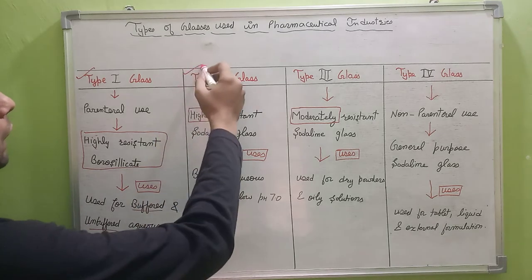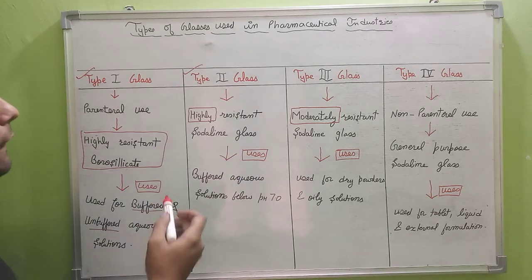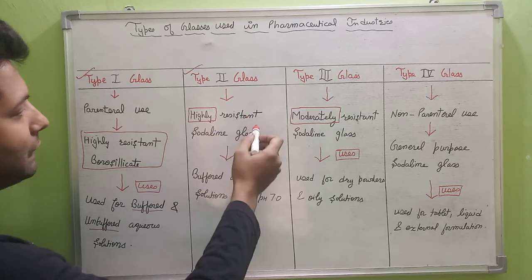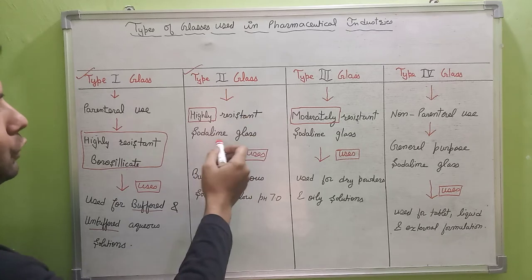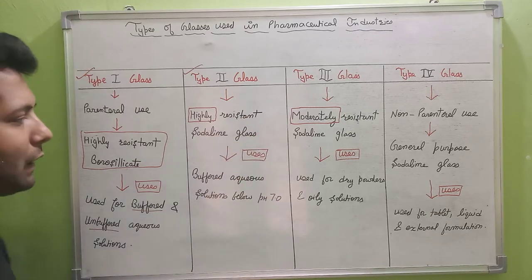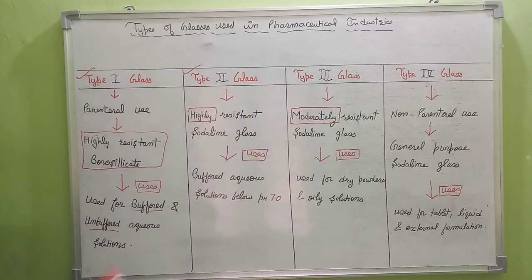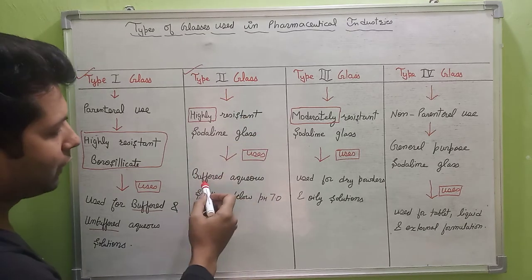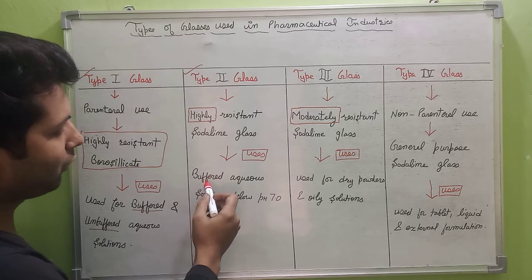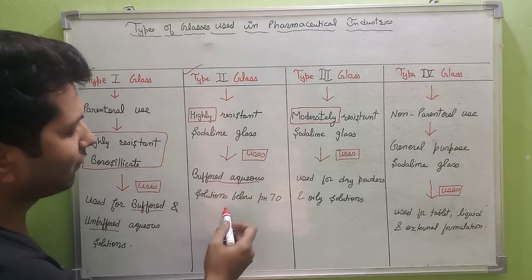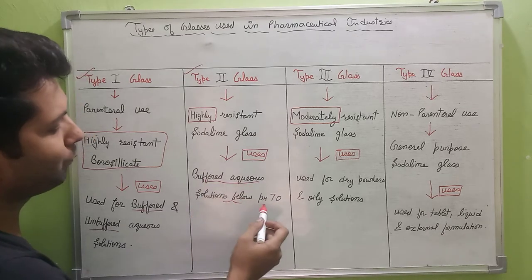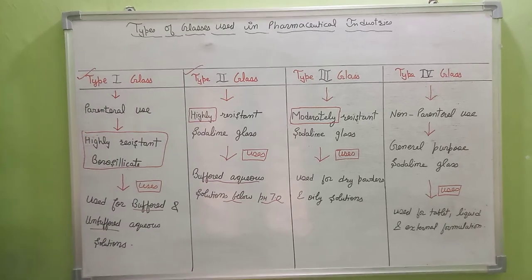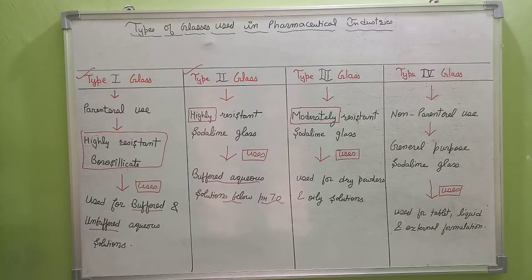Next is Type 2 glass. Type 2 glass are highly resistant soda lime glass, and are mainly used for the storage of buffered aqueous solution below pH 7.0.